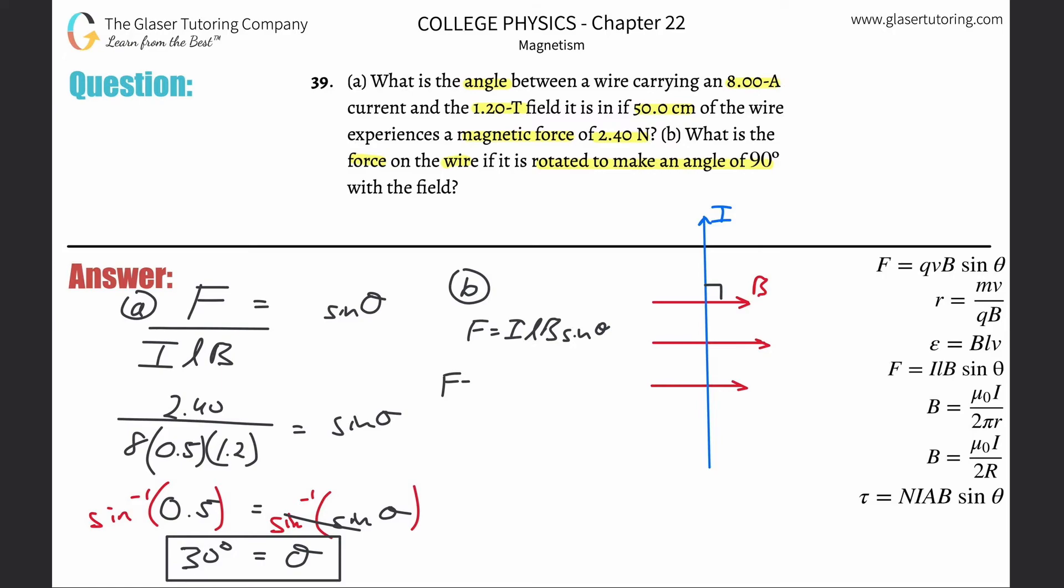Force here is going to be equal to the current, so that's 8. Length is going to be 0.5 again. The magnetic field was 1.2. And now sine of 90, which is just 1, so you don't even have to write it in. Multiplying anything by 1 doesn't do anything. So 8 times 0.5 times 1.2. What do we get now? We get 4.8. 4.80 newtons.